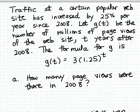Because this number of page views is increasing at a steady percentage rate each year, that indicates that this function g is going to be an exponential function. And indeed that's the case, because here's the formula for g: g of t is 3 times 1.25 to the t power, and you can see that that's the formula for an exponential function.